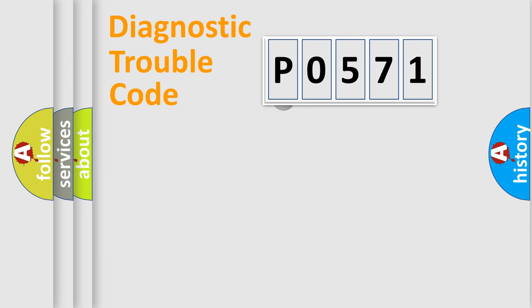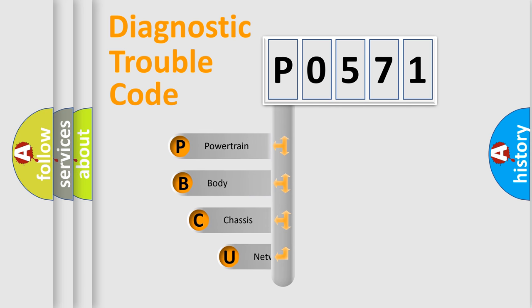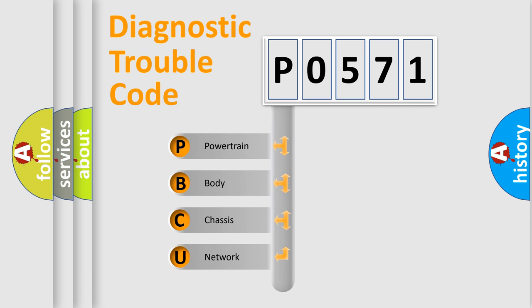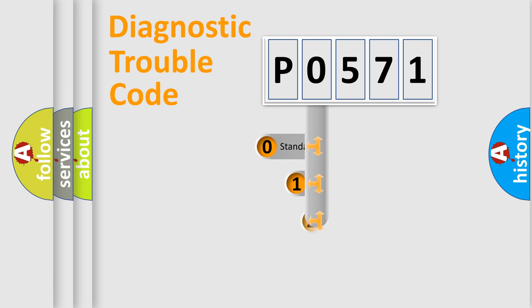Let's look at the history of diagnostic fault code composition according to the OBD2 protocol, which is unified for all automakers since 2000. We divide the electrical system of an automobile into four basic units: Powertrain, Body, Chassis, and Network. This distribution is defined in the first character of the code.